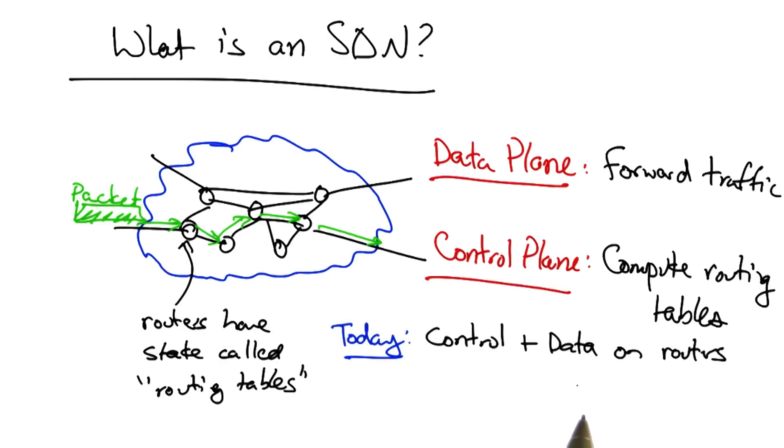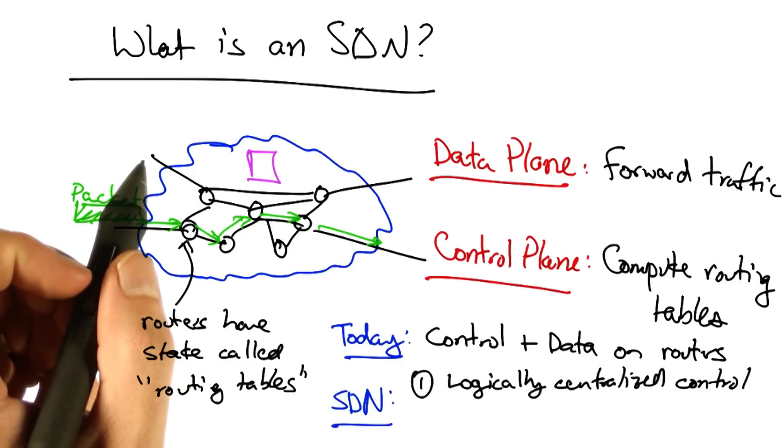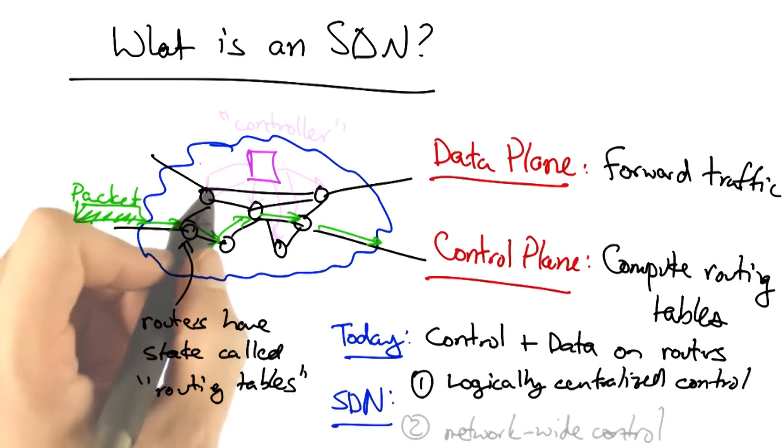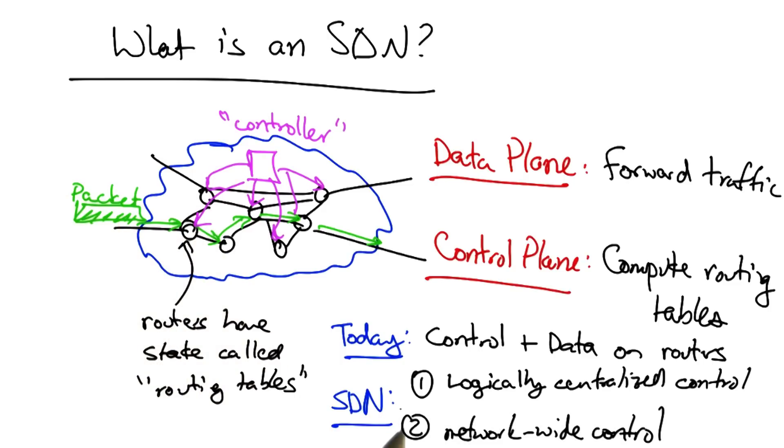In conventional networks, the control and data plane both run on the routers that are distributed across the network. In an SDN, the control plane runs in a logically centralized controller. Additionally, the controller typically controls multiple routers across the network. And often, the control program exerts control over all of the routers in the network, thus facilitating network-wide control. These two characteristics are the defining features of a software-defined network.